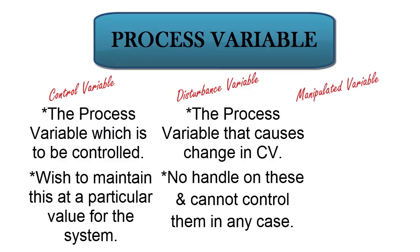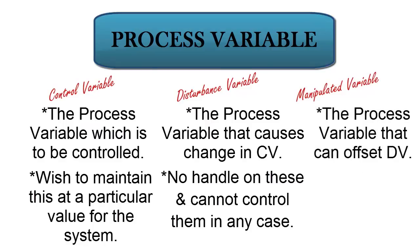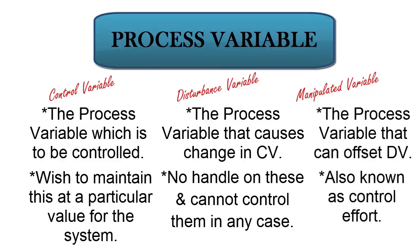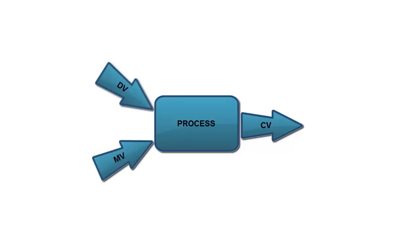Third, the manipulated variable. This is the process variable that can offset the disturbance variable; it is also known as control effort. Basically, whenever we have a change in the disturbance variable, we try to counter that change by regulating the manipulated variable correspondingly. From an input-output point of view, the control variable is at the output of the process, while the disturbance variable and the manipulated variable are at the input to the process.